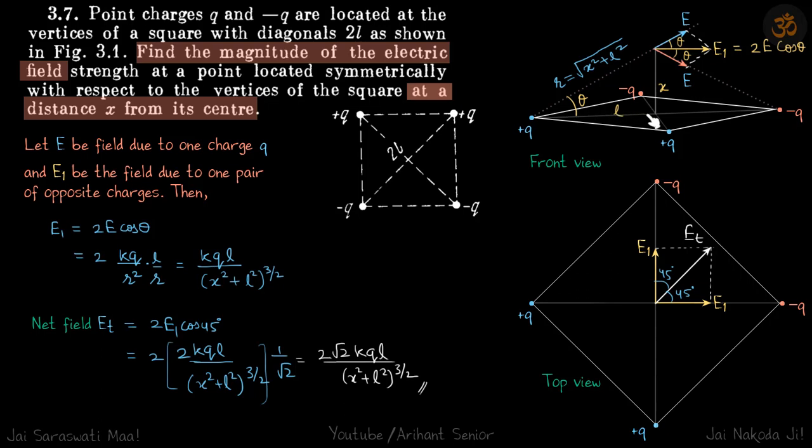If this diagonal is making theta angle with this point, then this will also make an angle theta with the horizontal electric field. Same here, this electric field will also make theta angle with the horizontal downwards.